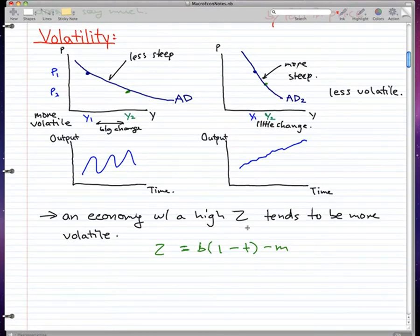What I forgot to mention about volatility is that an economy with a high Z tends to be more volatile. A high Z means a high simple multiplier, which will indicate our economy being more volatile than it should be.